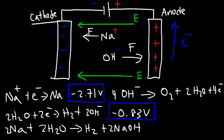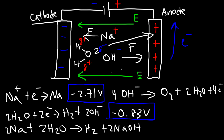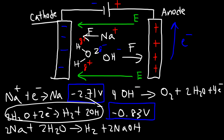Water molecules near the cathode are oriented so that the oxygen — which bears a partial negative charge — faces the anode, and the hydrogen — which bears a partial positive charge — faces the cathode. The partial positive charge of hydrogen is attracted to the negatively charged cathode, so the water molecules close to the cathode can easily be reduced into hydrogen gas. Those water molecules pick up electrons and produce hydrogen gas and hydroxide ions.